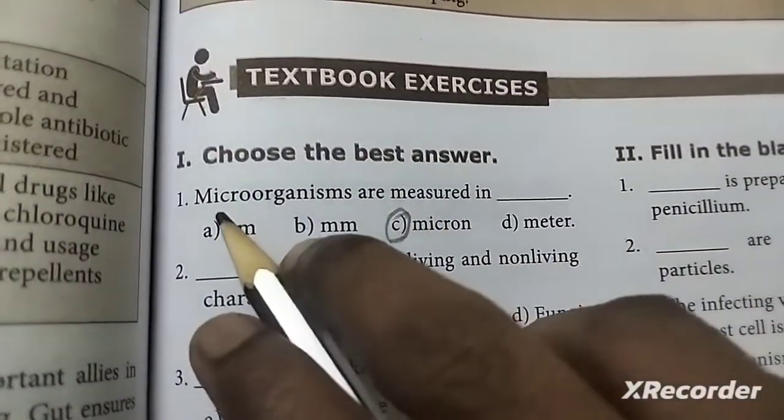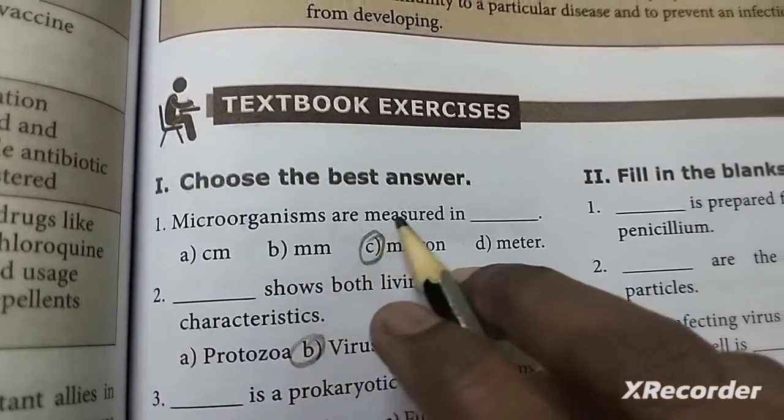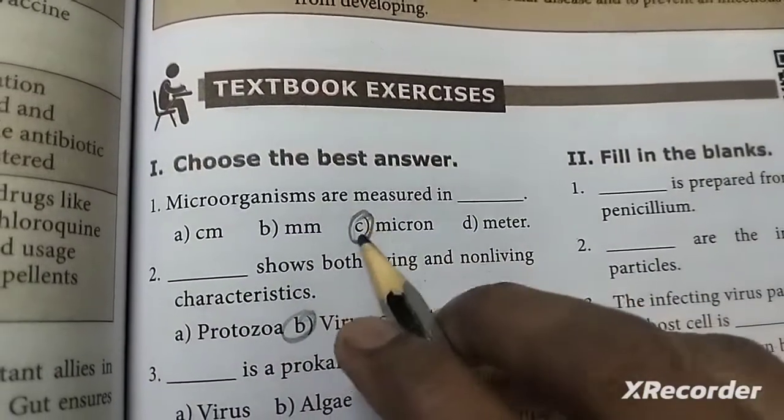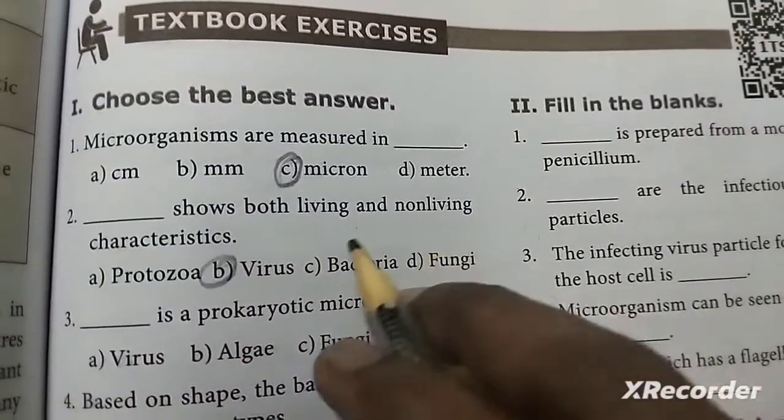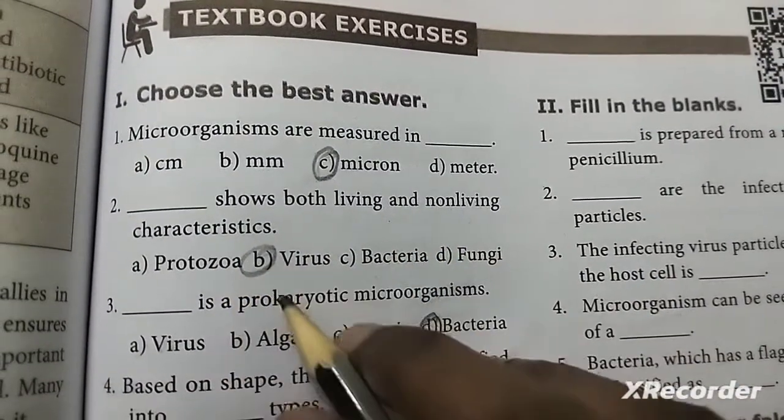First, choose the best answer. First one: microorganisms are measured in microgram. Second one: shows both living and non-living characteristics, which is the virus.